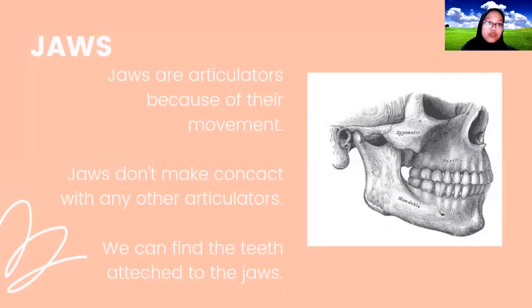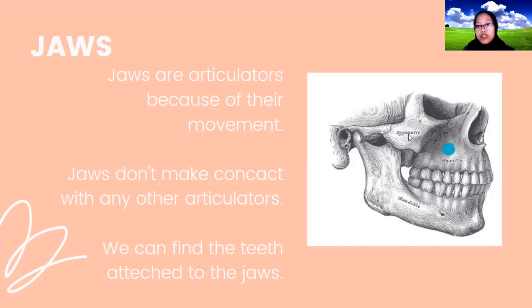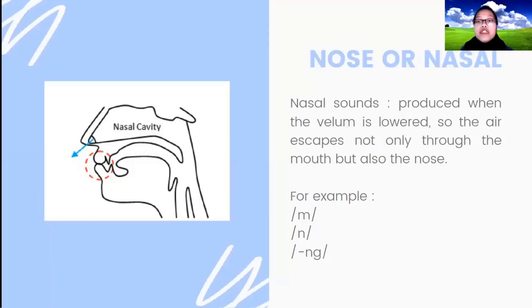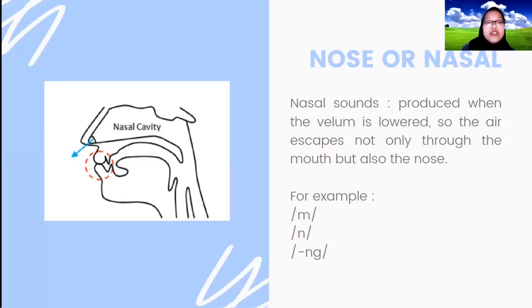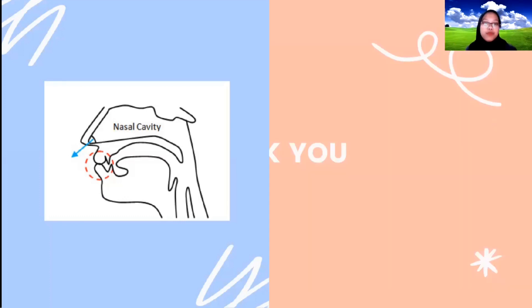Next are the jaws. Jaws are articulators because of their movement; jaws don't make contact with any other articulators, but we can find the teeth attached to the jaws. Nasal sounds are produced when the velum is lowered so the air escapes not only through the mouth but also through the nose — for example, sounds like M and N.